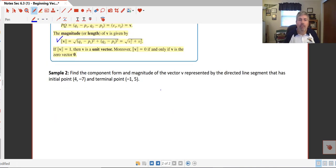So in sample 2, it says find the component form and magnitude of the vector V represented by the directed line segment that has an initial point 4, negative 7, and a terminal point negative 1, positive 5. So when you say these are two points A and B, vector AB would essentially be the vector denoted by negative 1 minus 4, 5 minus negative 7.